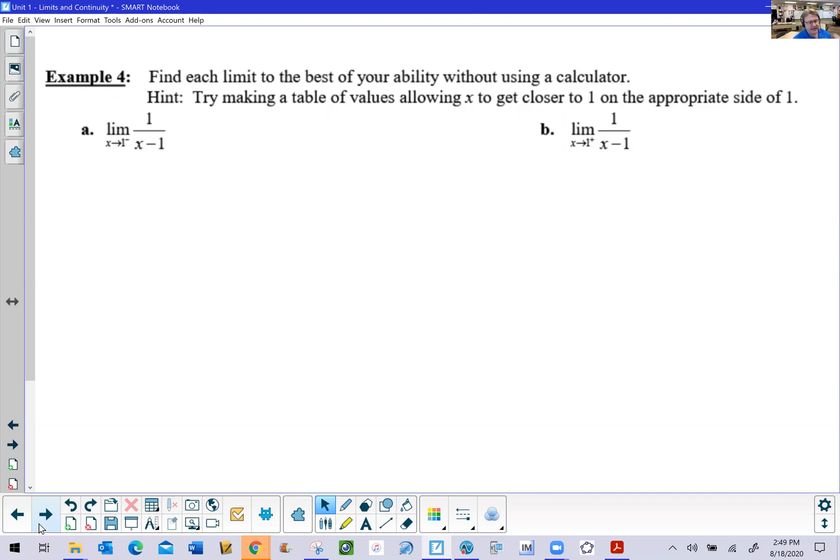The directions say to find each limit to the best of your ability without using a calculator. Hint: try making a table of values allowing x to get closer to 1 on the appropriate side. We have the same function, 1 over x minus 1. We're going to approach 1 from the left and from the right.